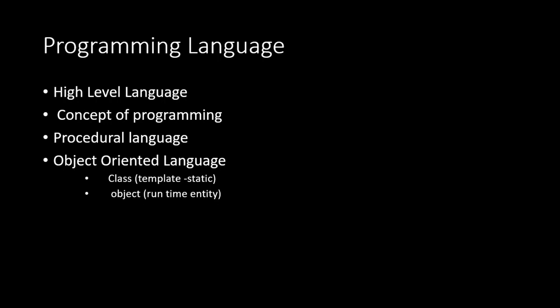For that we have to follow some set of instructions, and those instructions will be given in a general syntax format so that the system can understand. When you are asked to do some problem — for example, calculate the area of a square — you will ask what is the side of the square. Without an input, we cannot process the program. So any programming language consists of basically three parts: input part, processing part, and output part. In the input part, the programmer defines the variables. In the processing part, the programmer implements the logic. In the output part, it tells the calculated value after processing. This is the general structure of any programming language.